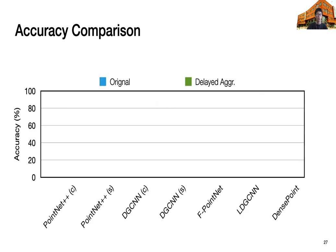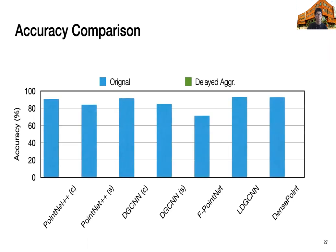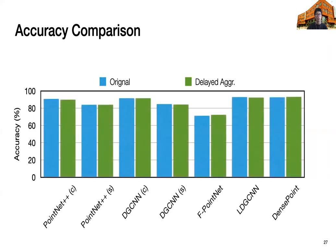First, let's see our accuracy result. So, the x-axis shows different networks, and y-axis shows the accuracy. We first show the original result. Next, we will show our result. As we can see, our delay aggregation can achieve similar accuracy as the original algorithm.